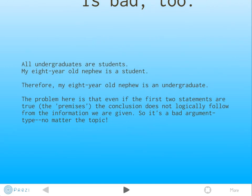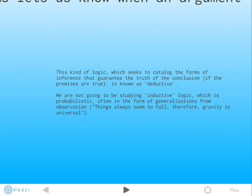Here's a bad argument. All undergraduates are students. My eight-year-old nephew's a student. Both these things are true. Therefore, my eight-year-old nephew is an undergraduate. Well, no, that doesn't follow. The problem here is that even if the first two statements are true, the premises, the conclusion does not logically follow from the information we're given. So it's a bad argument type, and that's true no matter the topic.